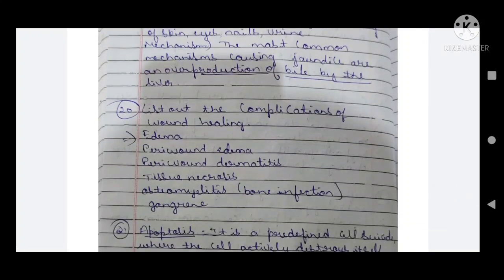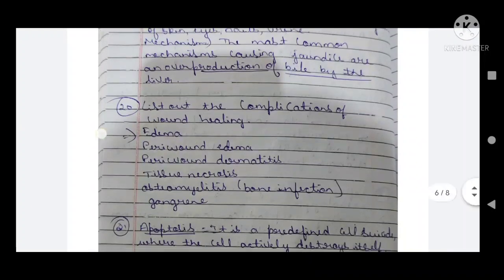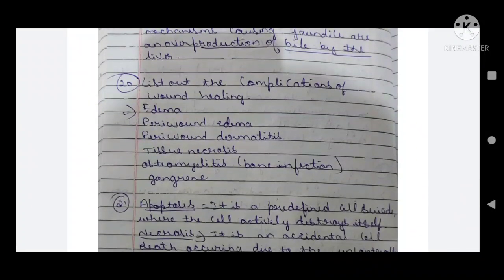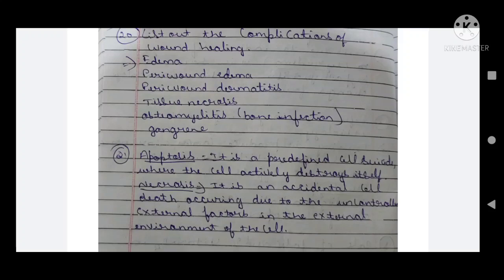Twentieth question: list out the complications of wound healing. Complications include edema, peri-wound edema, peri-wound dermatitis, tissue necrosis, bone infection (osteomyelitis), and gangrene.